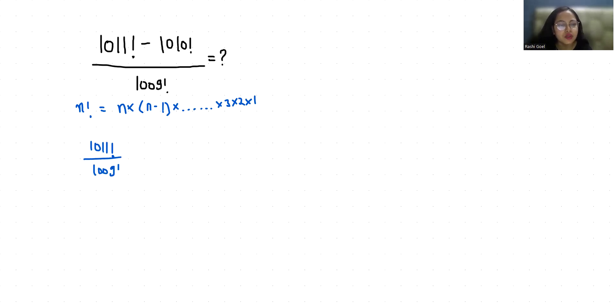Now 1011! I can write as 1011 × 1010 × 1009!. So we have (1011 × 1010 × 1009!) / 1009! minus (1010 × 1009!) / 1009!. We can cancel out 1009! from numerator and denominator.